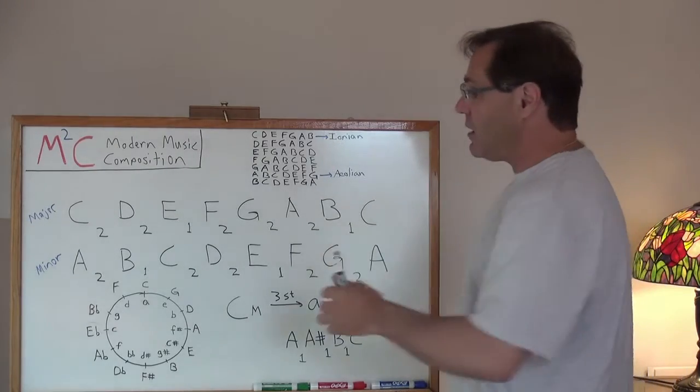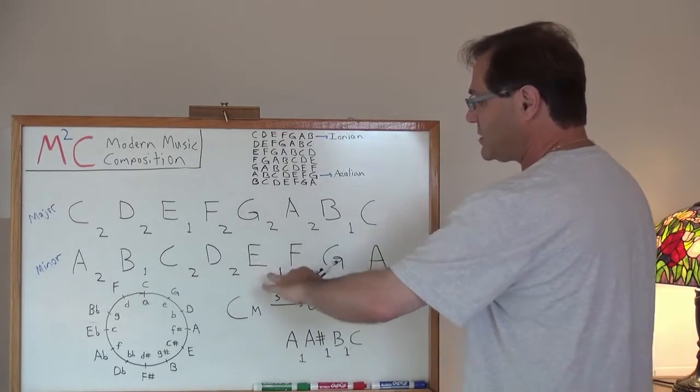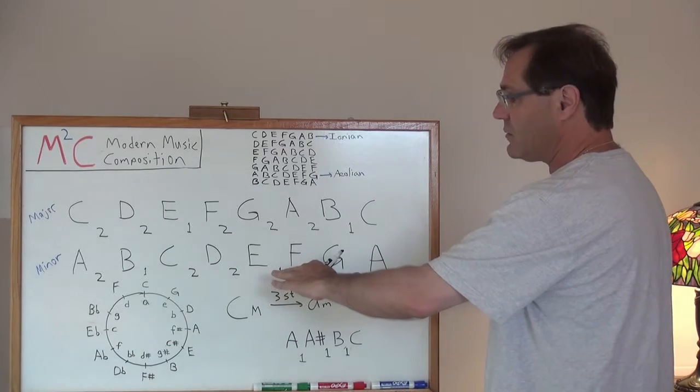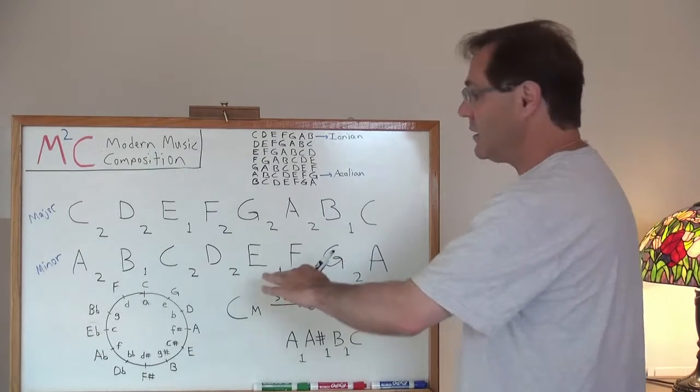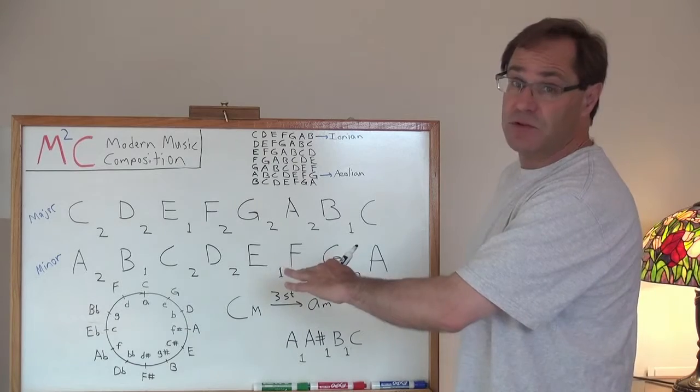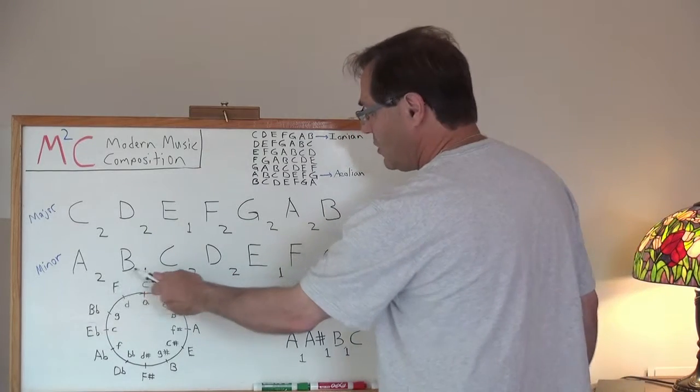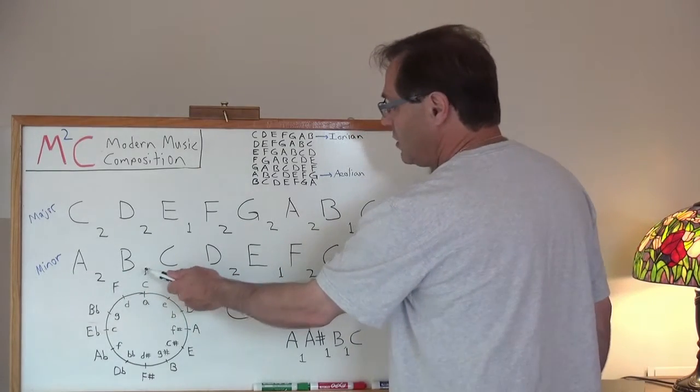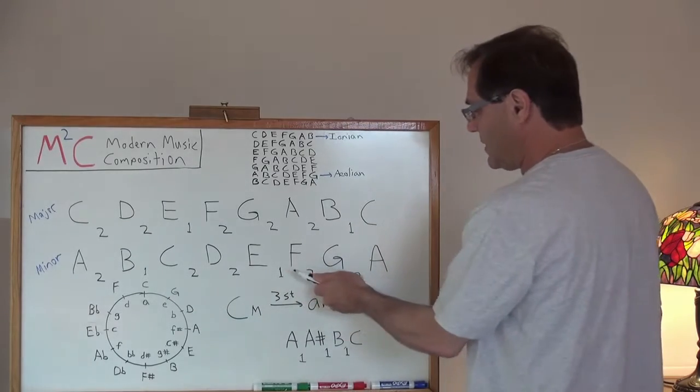For the minor, all we've done is switched and shuffled around, in an orderly fashion actually, the interval structure. It goes two, so it was whole, semi, whole, whole, semi, whole, whole.